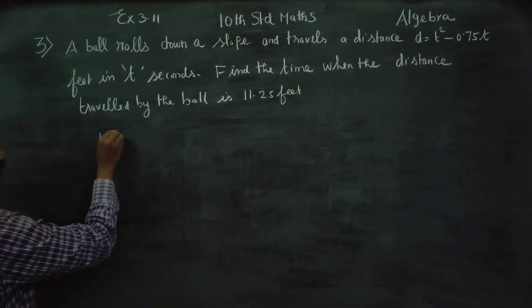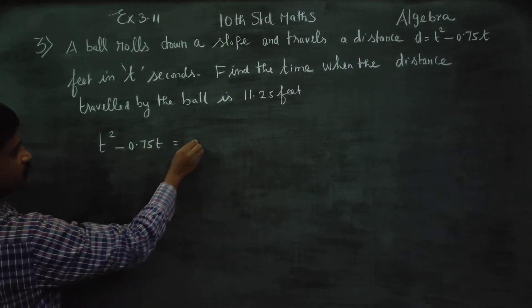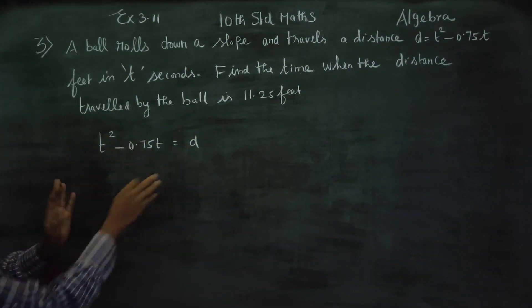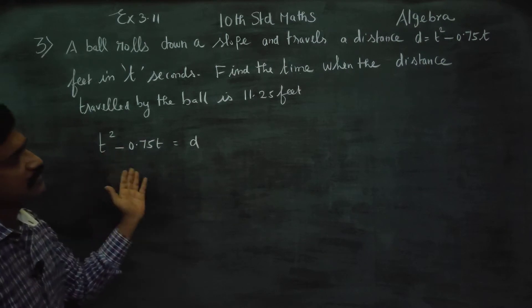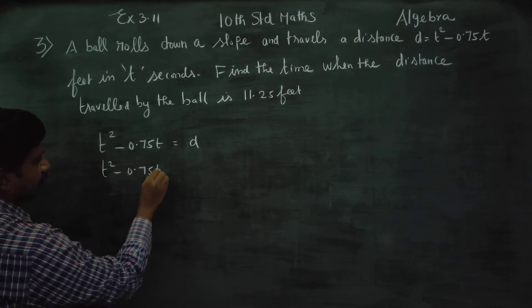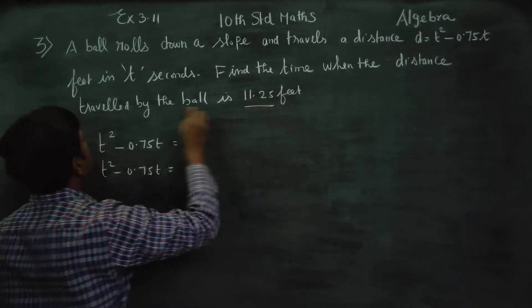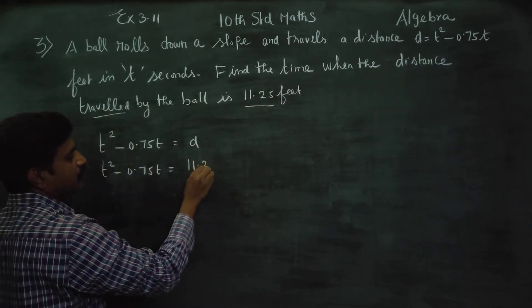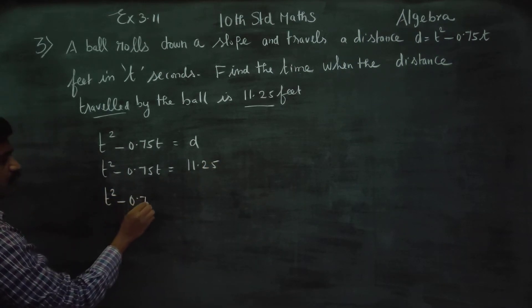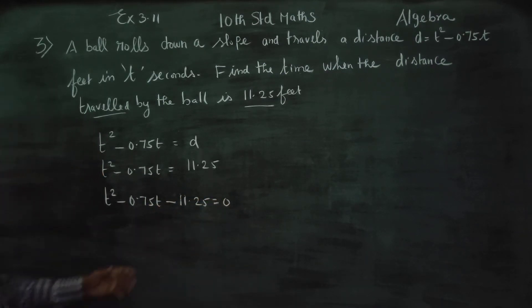So t squared minus 0.75t is equal to the distance traveled. Now substituting d equal to 11.25, we get t squared minus 0.75t minus 11.25 is equal to 0. We need to find the time t.